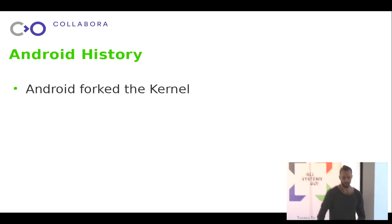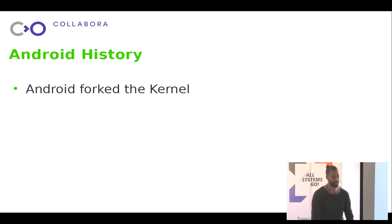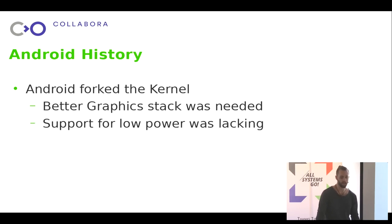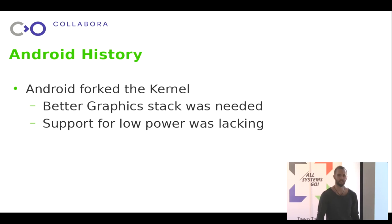This is how we got here. Android forked the kernel, and that's fine - that's what open source is for. They had good reasons to do so, because the graphics stack and infrastructure wasn't particularly good, didn't suit their needs, support for low-powered devices was very much lacking, and the overall graphics subsystem really needed an overhaul.